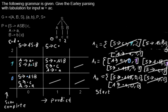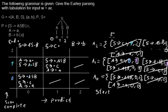The next item has the dot in front of B, so I can do more predict steps. The dot is at position 2, so the new items start at 2 and go into that cell. We have two B rules: I add B→.B starting at 2 ending at 2 to the agenda.